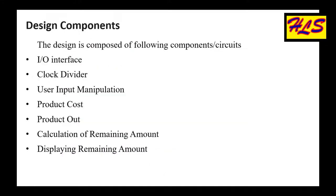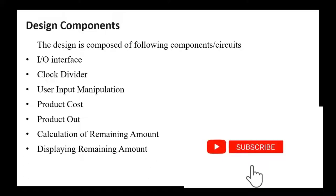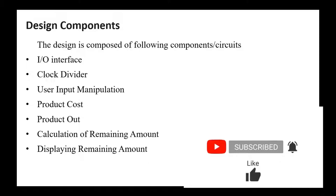This is the main interface of the design, with the main components as follows: first the IO interface, then the clock divider, then user input manipulation, then product cost, then the product output phase. The preparation of the remaining amount is next, and finally the displaying of the remaining amount.